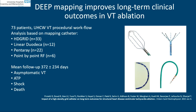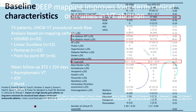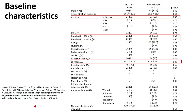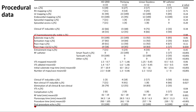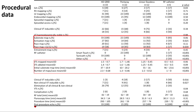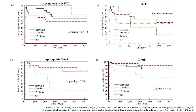In our IMPACT-VT study, we compared four different mapping catheters using a deep-based ablation strategy in 73 patients. The HD grid arm had 33 patients, all with either ATP or shock, predominantly ischemic cardiomyopathy with poor LV function. We performed substrate maps and activation maps in a high number of cases, with 1.5 VTs mapped per mean and substrate map time of 37 minutes. Over 12-month follow-up, we didn't have a single patient come back with a recurrent shock, and only one patient had recurrent ATP therapy.